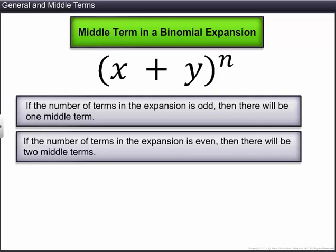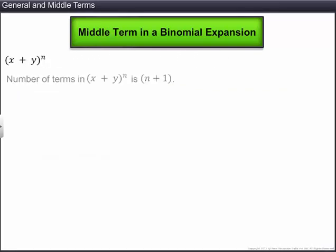Thus, the number of middle terms in an expansion depends upon the index of the binomial. When the index of a binomial is n, there will be n plus 1 terms in the expansion.